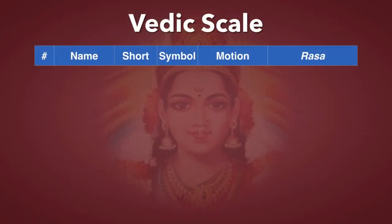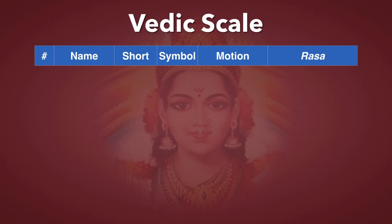The Vedic scale is composed of seven Swaras, and the first one is called Shadja, or Sa for short. The symbol is S, and it's Achala — it doesn't move. And the Rasa that it expresses is Brahman, oneness with the all.